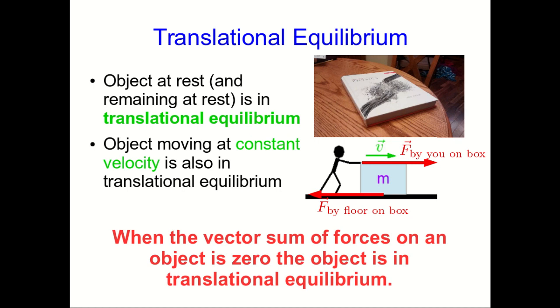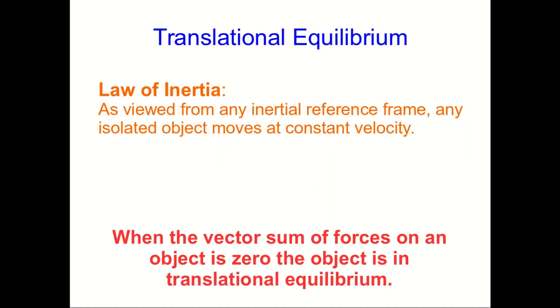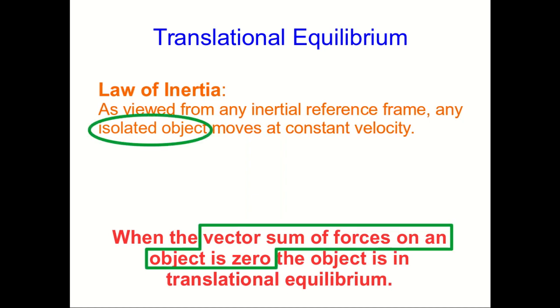So we've seen that when the vector sum of forces on an object is zero, the object moves with constant velocity, or in other words, it's in translational equilibrium. But we've already seen this idea much earlier in the course in another disguise. Think of the law of inertia. As viewed from any inertial reference frame, any isolated object moves at constant velocity. Well, an isolated object is an object that isn't interacting with the environment. Except we now see another possibility. If all the interactions cancel each other out, that's the same thing as not interacting with the environment. And so having a vector sum of forces that is zero acting on an object is the same thing. That's isolated. And constant velocity is the same thing as translational equilibrium.